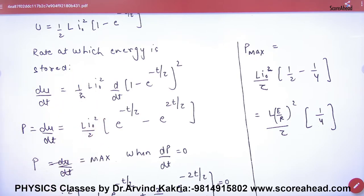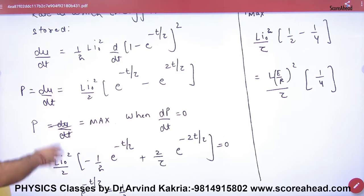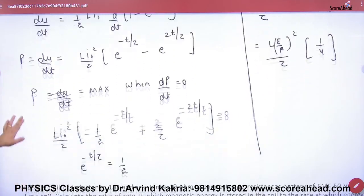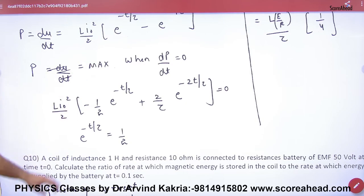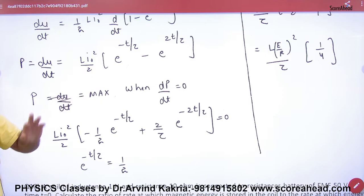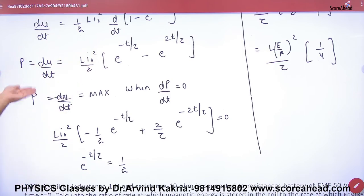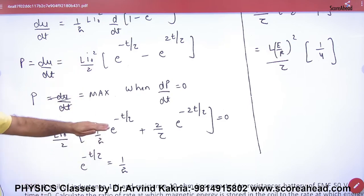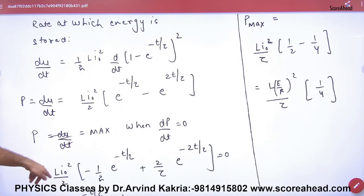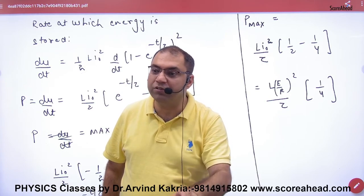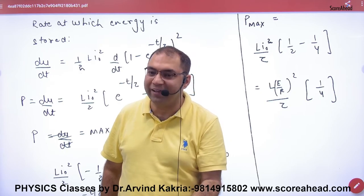To find the rate of change of energy, differentiate with respect to time — this gives power. Now the question asks for the maximum rate, so it's a maximum-minimum problem. Differentiate the power again and set it equal to zero. Putting d(power)/dt = 0 gives you the time value. Substitute back into the power expression to get maximum power. Note: this is not for medical students — half LI² uses E, not Z.